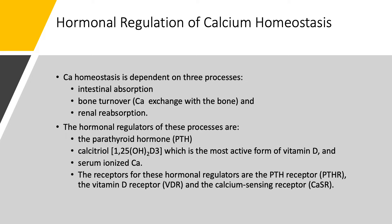What about hormonal regulation of calcium homeostasis? This is critically important. When talking about calcium, you have three processes: intestinal absorption — getting calcium in through the intestine from food sources; bone turnover — because the biggest reservoir of calcium is in the bone, and there is always an exchange with the bone; and renal reabsorption — because the kidneys filter a lot of calcium and have to reabsorb it. Remember these three: intestinal, bone, and kidney.